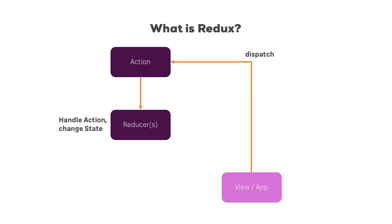It takes the action and handles the action. So if the action is 'change name', the reducer will have a method which knows what to do upon a change name action — namely change the name. It will then take the old state and manipulate it in a way that it now reflects this action, executing this single action on the old state and giving us back a new state.